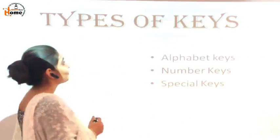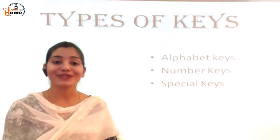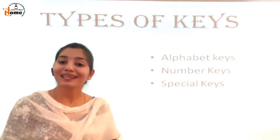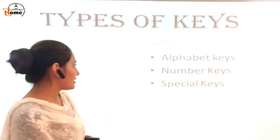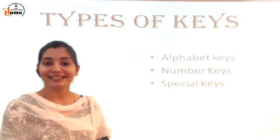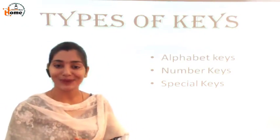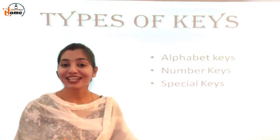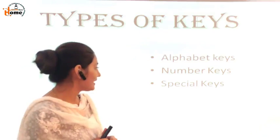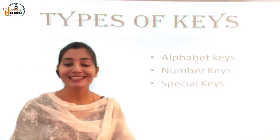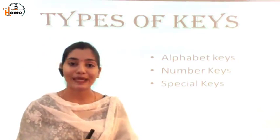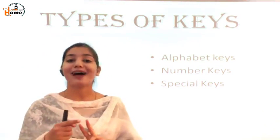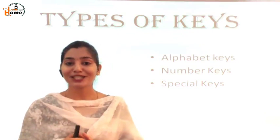Now we will learn about the types of keys on the keyboard. What are the different types of keys on the keyboard? First, we have alphabet keys. Then we have number keys. And then we have special keys. We have three types of keys on the keyboard. Speak with me: alphabet keys, number keys, and special keys. Very good.